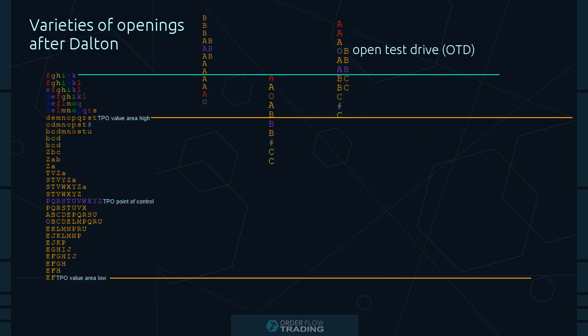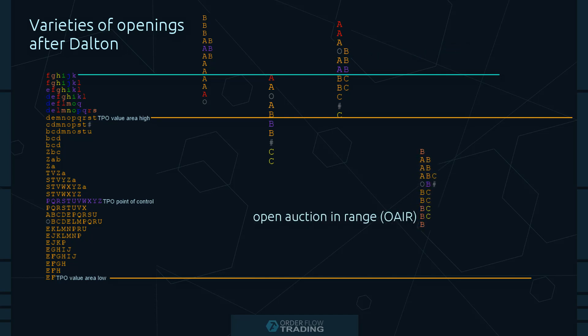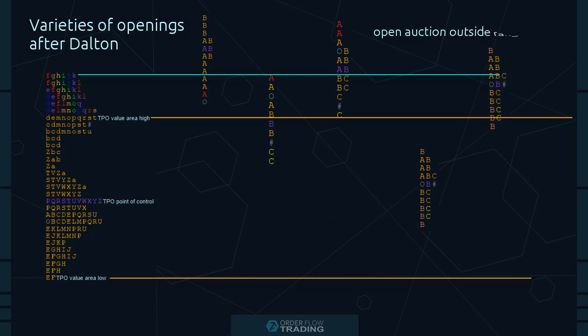Open Test Drive: The price moves above and below the previous day's value area. Open Auction in Range: The price opens inside the previous day's value area and is traded in the range around the opening — it doesn't move outside the previous day's value area. Open Auction Outside Range: The price opens outside the previous day's value area and is traded in the range around the opening, staying above or below the previous day's value area during the whole trading session.